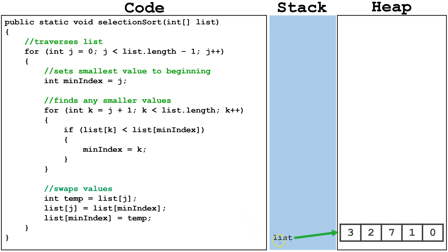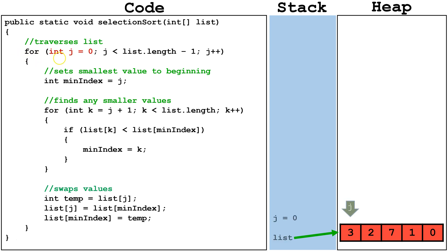We're going to create a list variable and have it point at an unsorted list of size 5. Since this entire list is unsorted, we're going to change the background to red. As portions of this list become sorted, we'll change those index backgrounds to green. Now we're going to start off at the top of the method. We'll declare j as equal to 0, because j is pointing at the first index in the unsorted portion of this list.